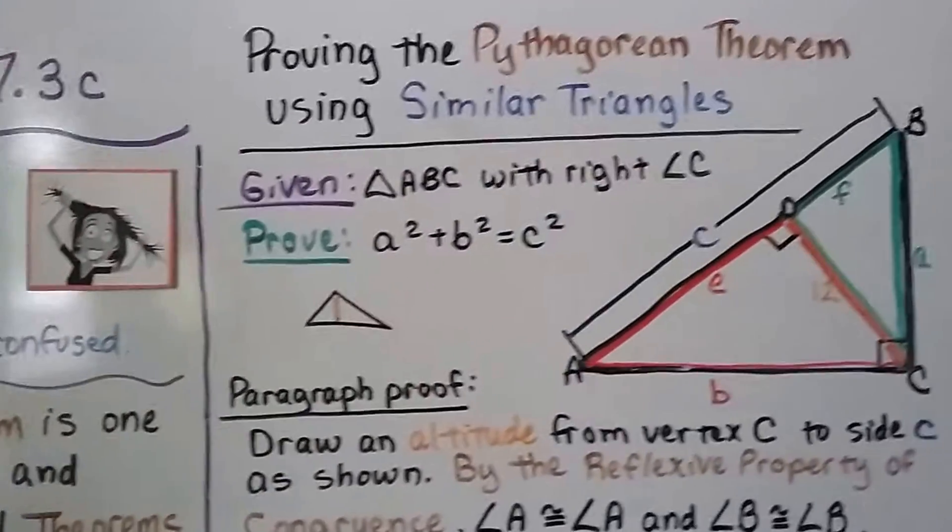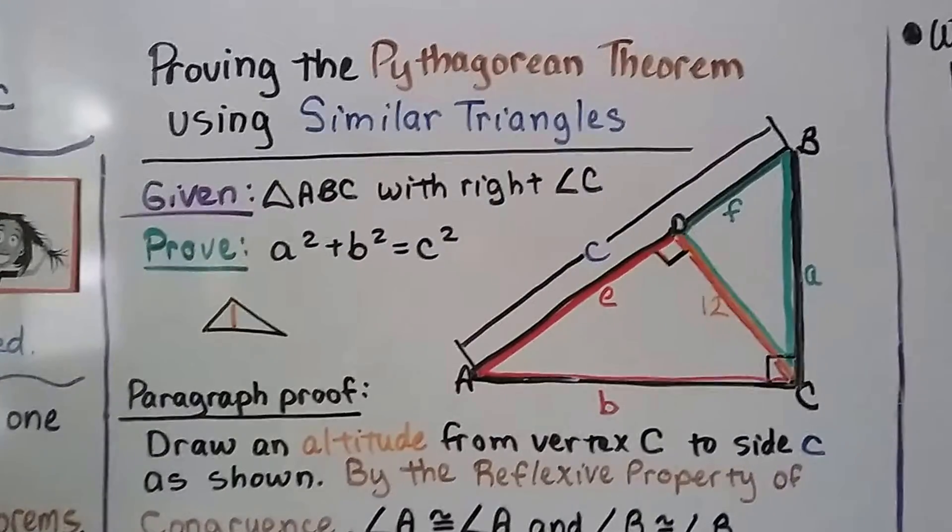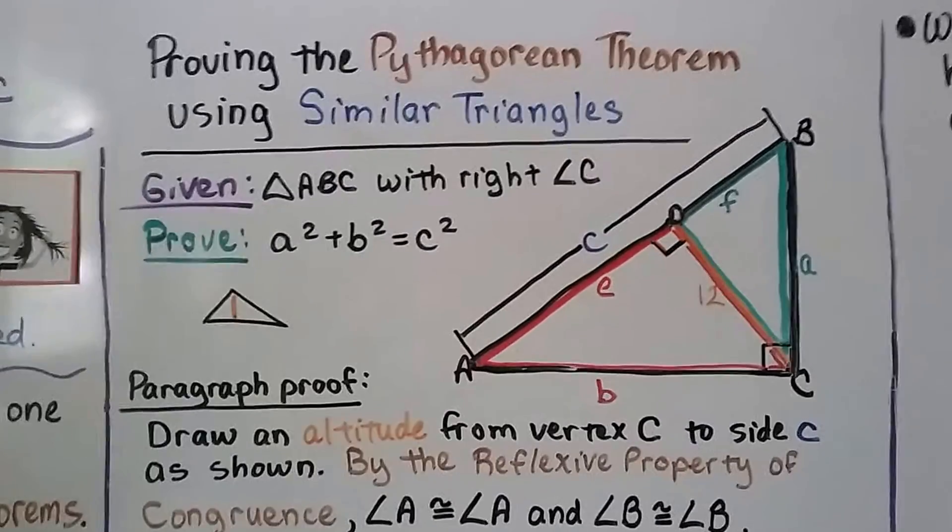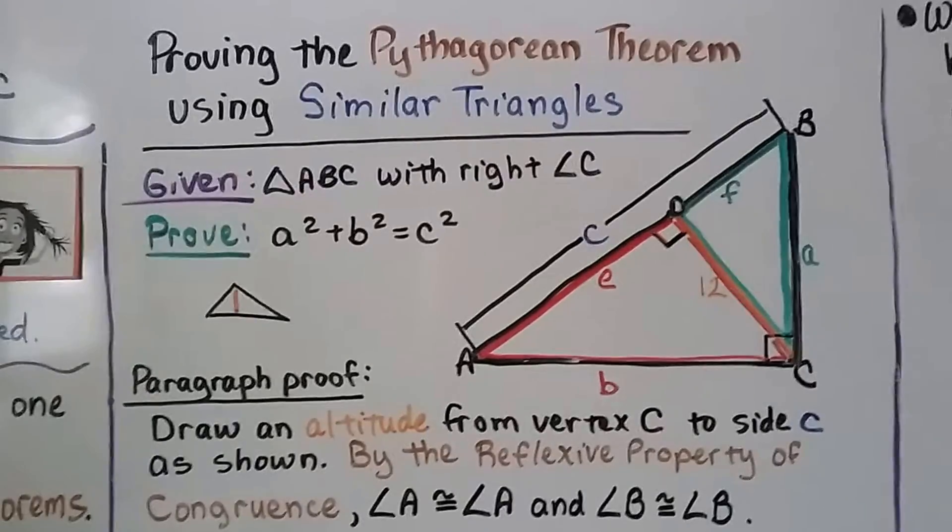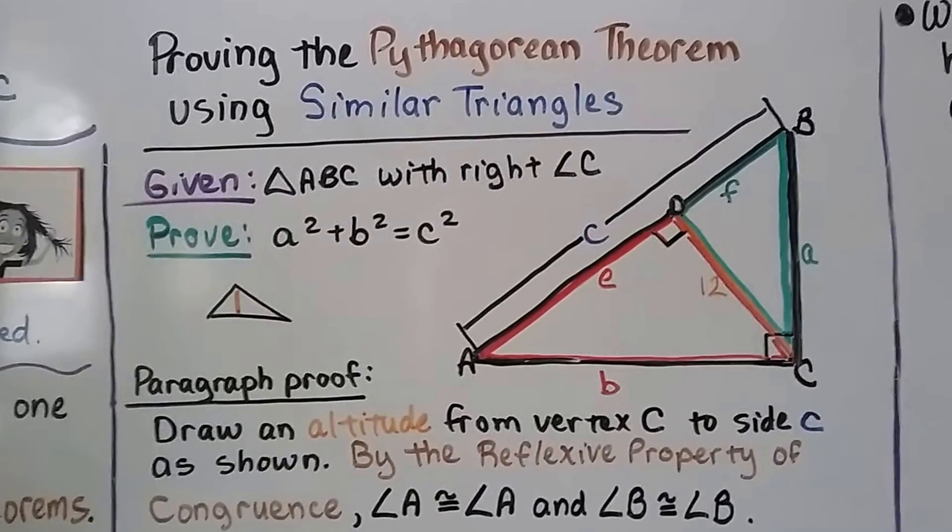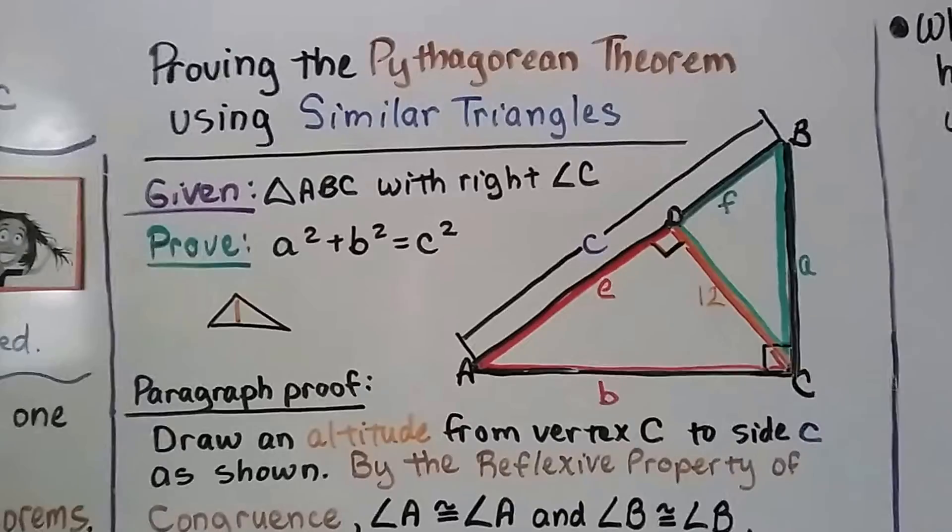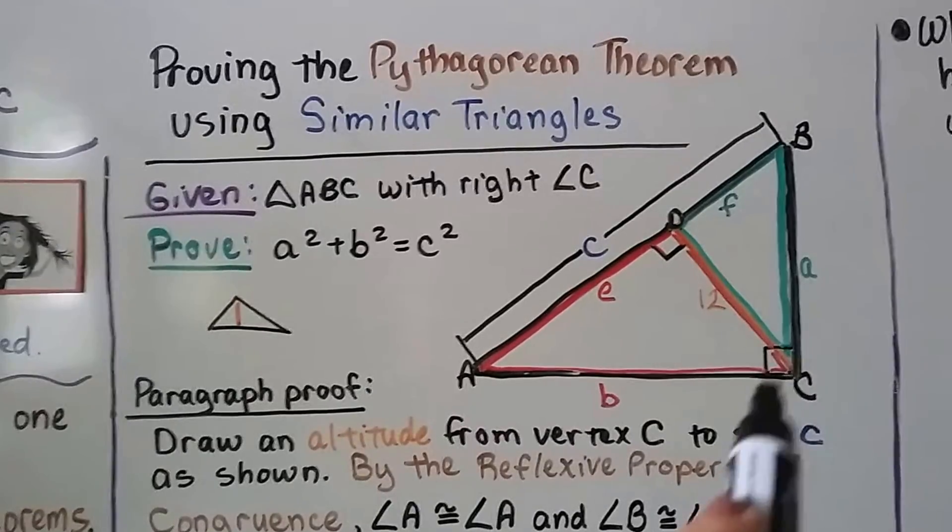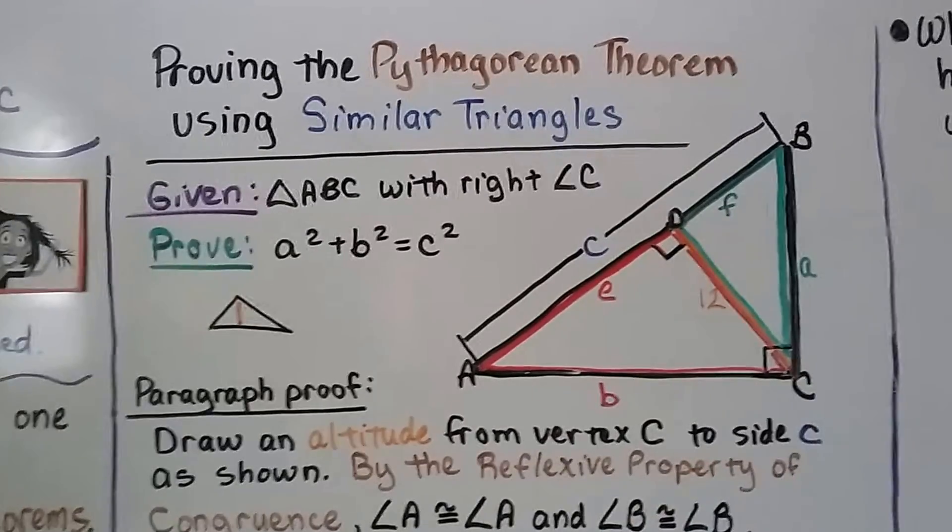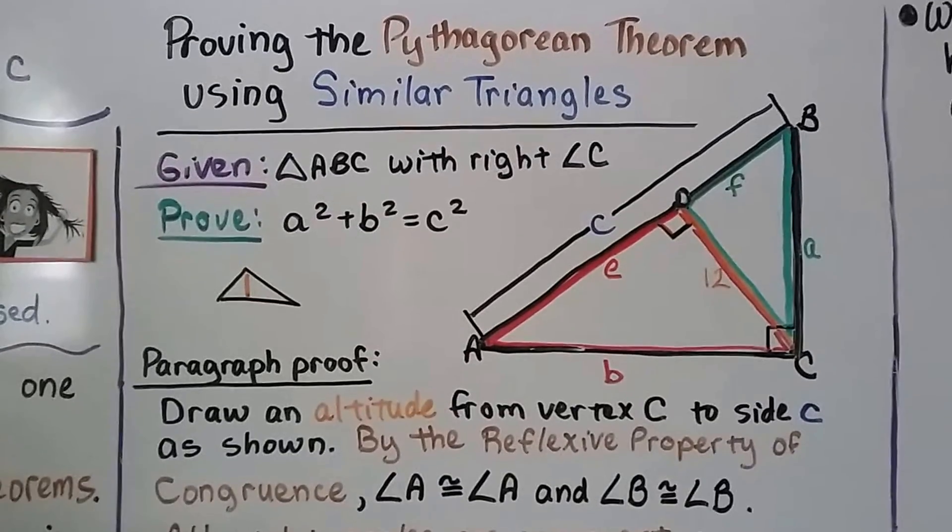And the proof we're about to do uses similar triangles. This is proving the Pythagorean Theorem using similar triangles. It's given triangle ABC, so that's the black outer border with right angle C right here. We need to prove that a squared plus b squared equals c squared.